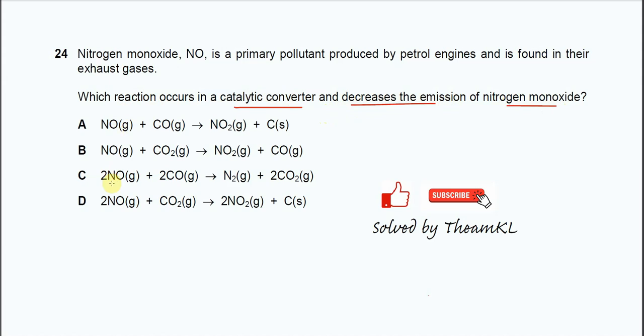For this answer we can see that the nitrogen monoxide all convert to different compounds. For A, nitrogen monoxide oxidized to nitrogen dioxide, and for B is the same. For C, the nitrogen monoxide reduced to nitrogen, and for D nitrogen monoxide oxidized to NO2. All these answers show that the emission of nitrogen monoxide decreases because NO converts to other things.